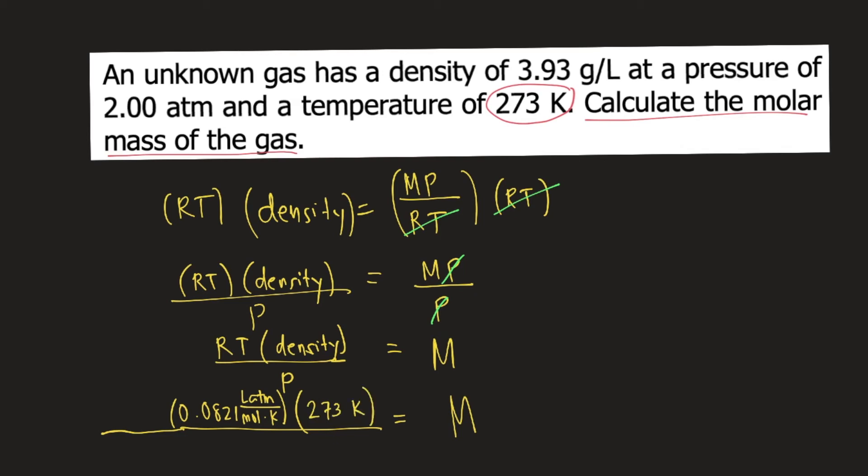And density is given 3.93 grams per liter. So 3.93 grams per liter divided by P or the pressure. Make sure that the pressure is in atmosphere or atm.